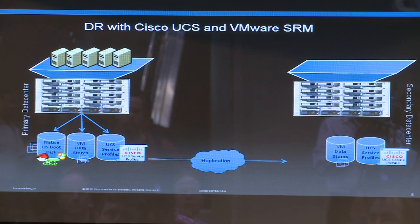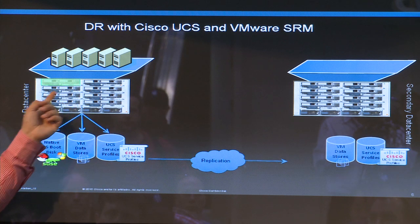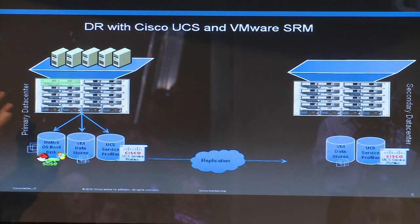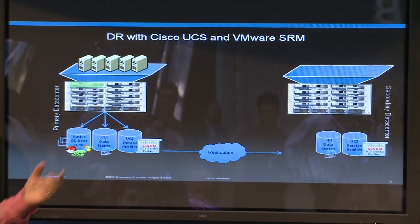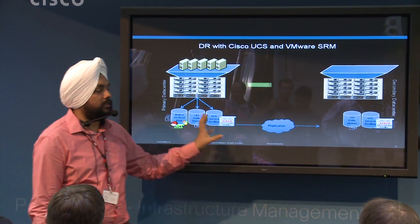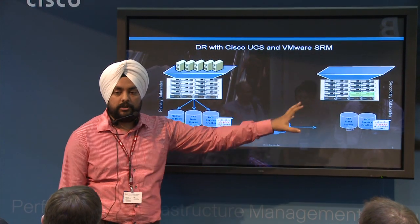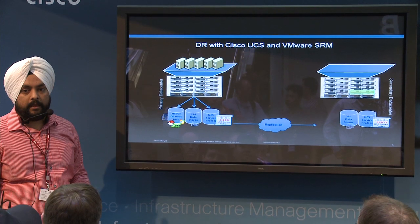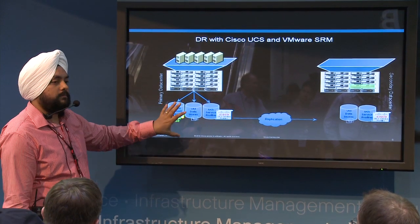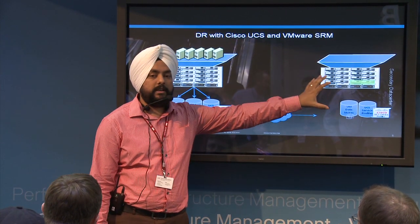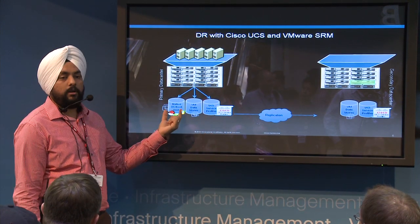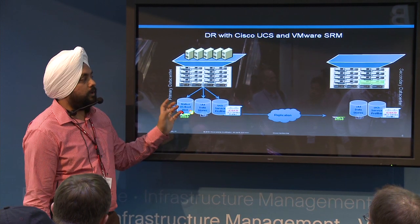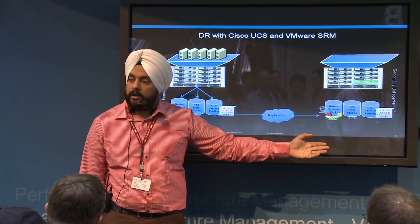What your blade on site A was logically defined as — the MAC address, WWN, firmware version, boot policy — everything can be taken and applied on a different blade, on a different chassis at the DR side. This gives you the freedom of not needing ESX pre-installed there, because your ESX was installed on your boot volume on the SAN storage, which is also being replicated to the DR side.